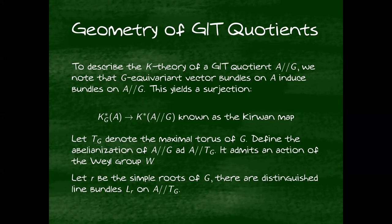The K-theory of a GIT quotient is actually determined by the equivariant K-theory of the thing you're taking the quotient of. If we have A mod G, there's a surjection from the G-equivariant K-theory of A onto the K-theory of A mod G. If you have a G-equivariant bundle on A, it descends to the quotient. This is known as the Kirwan map.